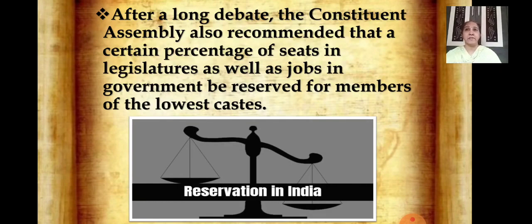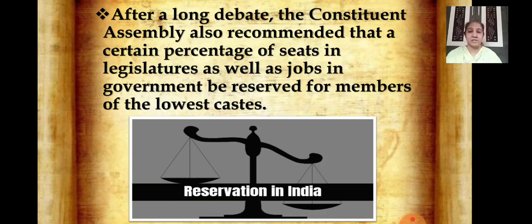After a long debate, the constituent assembly also recommended that a certain percentage of seats in the legislature as well as jobs in government should be reserved for the members of the lowest caste. If you compare this with political science, we have learnt in that chapter about reservations — even the lower caste has reservations today. In social science, you have to connect all three subjects. After a long debate, the constituent assembly recommended that some percentage of seats should be reserved for the lower classes.